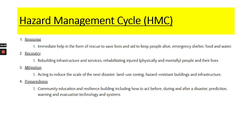The hazard management cycle is a four-stage process looking at the stages a nation, city or place might go through: responding to, recovering from, mitigating against, and preparing for the next hazard. Response is about responding to an event that has taken place — keeping people alive through emergency aid, food, shelter and water. Recovery is all about recovering from the actual event — rebuilding infrastructure, rebuilding services of the nation or city, and rehabilitating people who are injured physically and mentally so they can take part in everyday life and the economy.